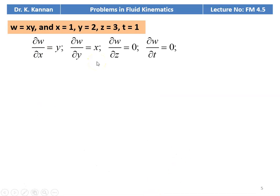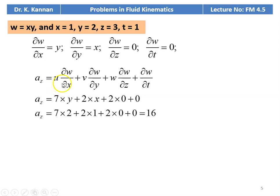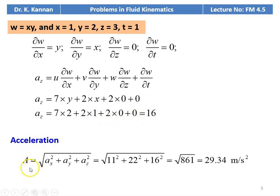The third component in the z direction: w equal to xy, so dou w by dou x equal to y, dou w by dou y equal to x, dou w by dou z equal to 0, dou w by dou t equal to 0. And az equal to u into dou w by dou x plus v into dou w by dou y plus w into dou w by dou z plus dou w by dou t. Substituting numerical values: 7 into 2 plus 2 into 1 plus 2 into 0 plus 0 equal to 16. The acceleration a equal to square root of ax squared plus ay squared plus az squared, which is square root of 11 squared plus 22 squared plus 16 squared equal to square root of 861, which is 29.34 meter per second squared.